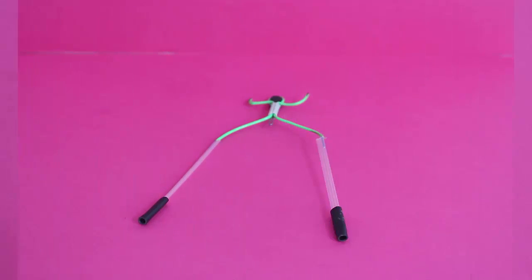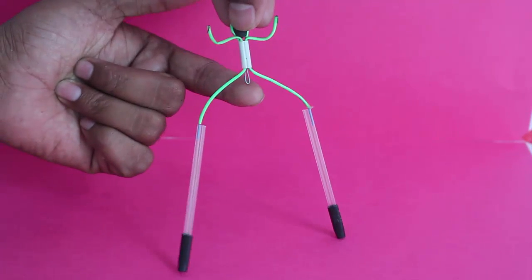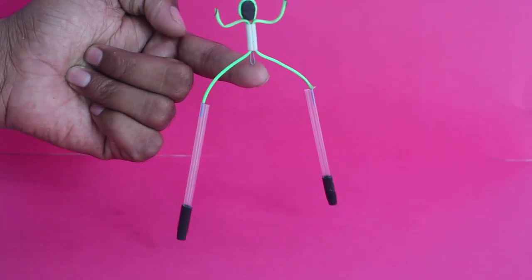Now place the pivot on your index finger and the wireman will balance beautifully because of its low center of gravity.